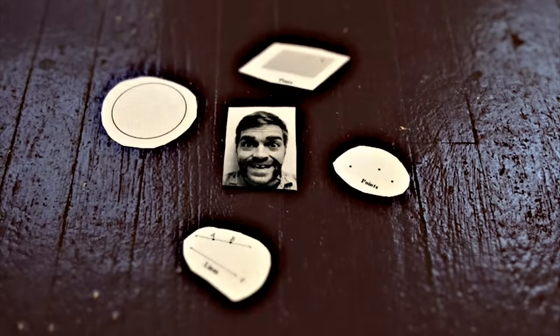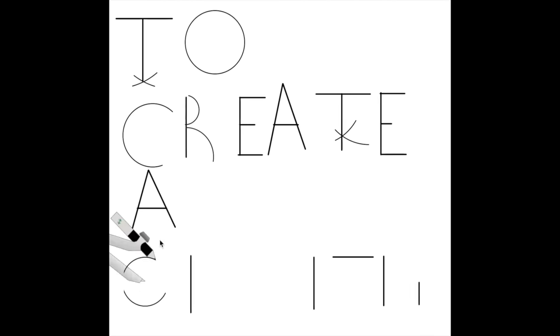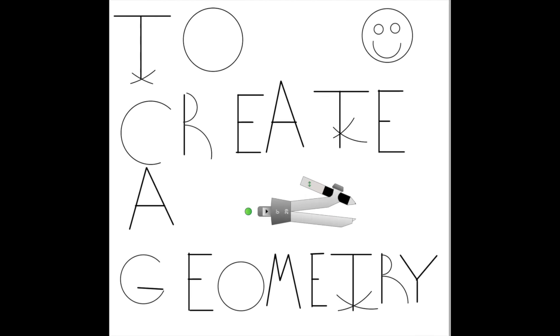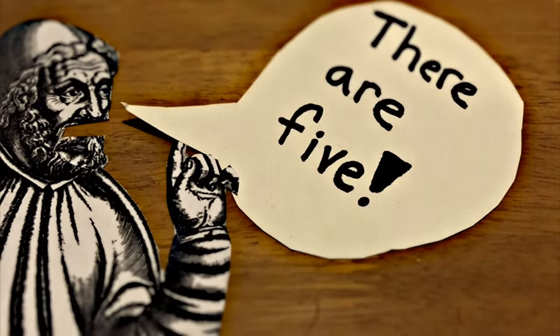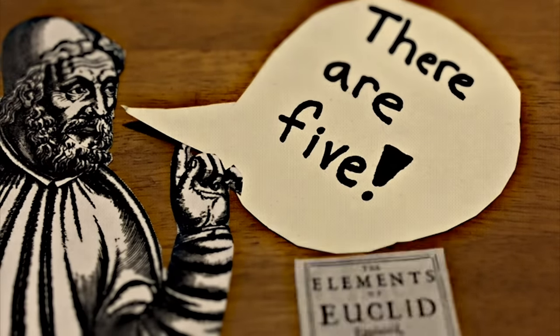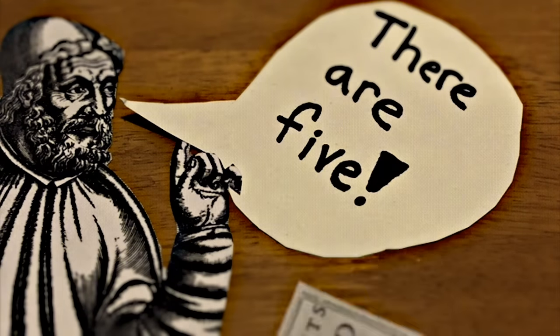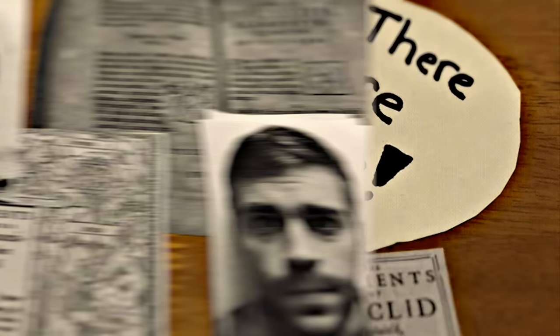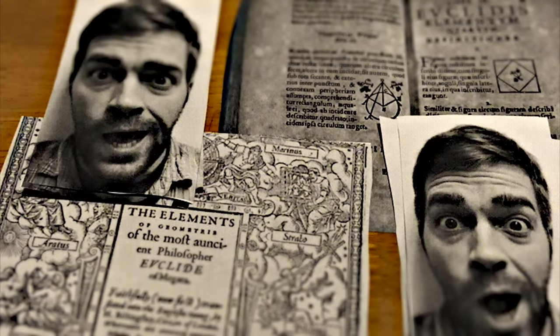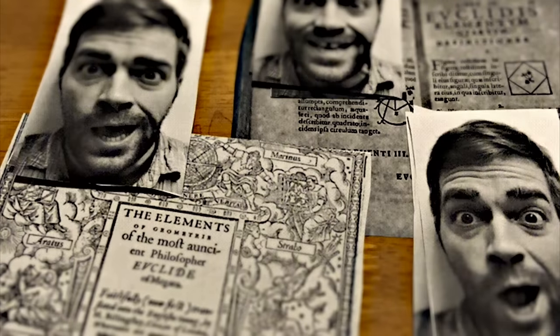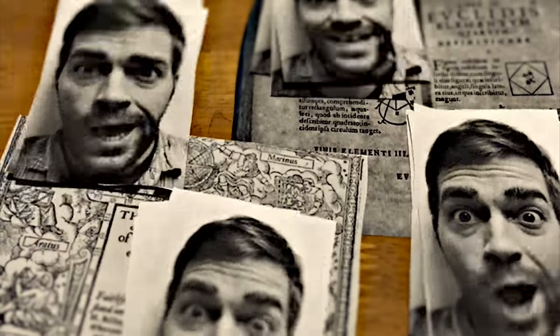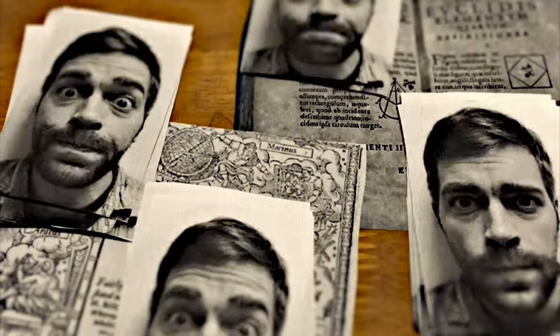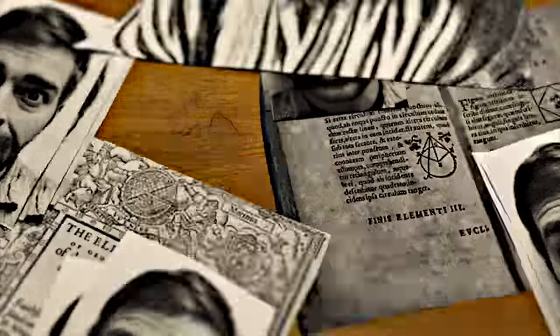Those are the things you must assume to create a geometry. Euclid said there were five, the only ones you would ever need. Those are the things you must assume.